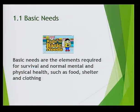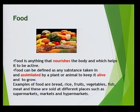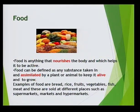People have basic needs. They have to fulfill these basic needs to be able to survive. Examples of basic needs are food, shelter and clothing. Food is anything that nourishes the body and which helps it to be active. Food can be defined as any substance taken and assimilated by a plant or animal to keep it alive and to grow.